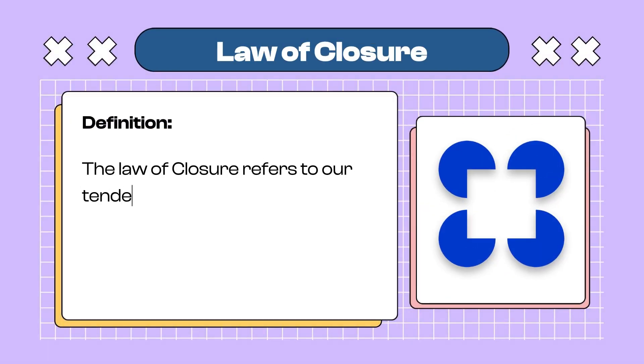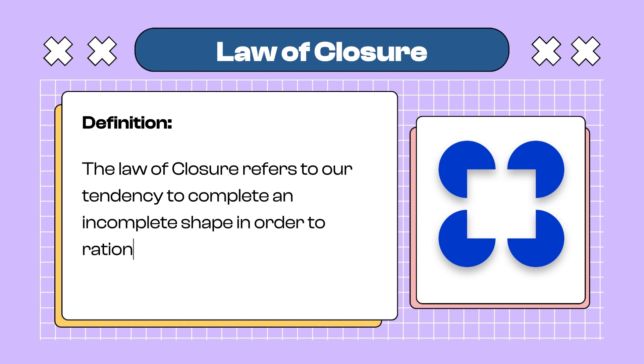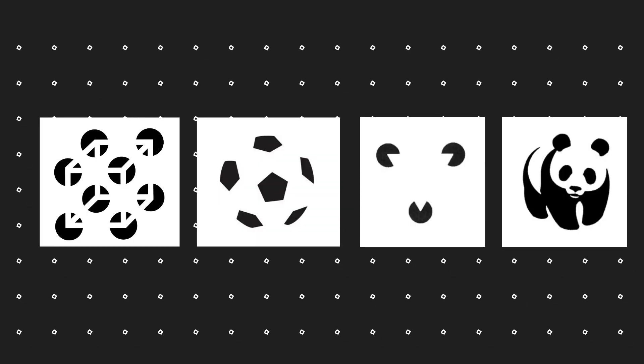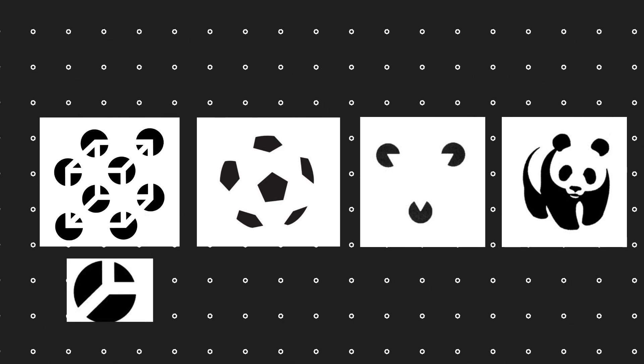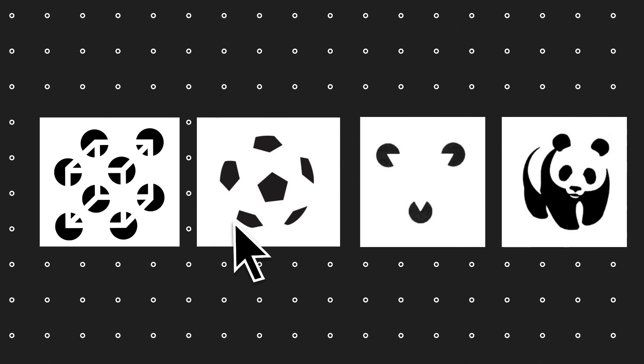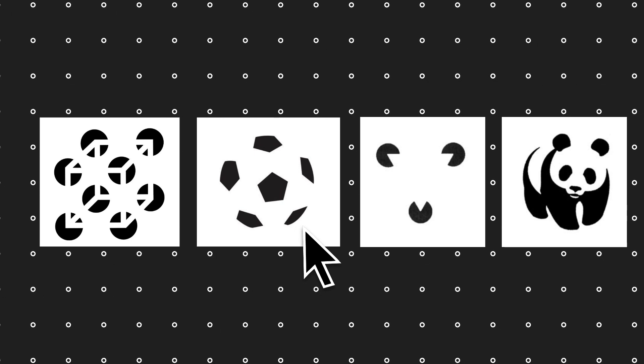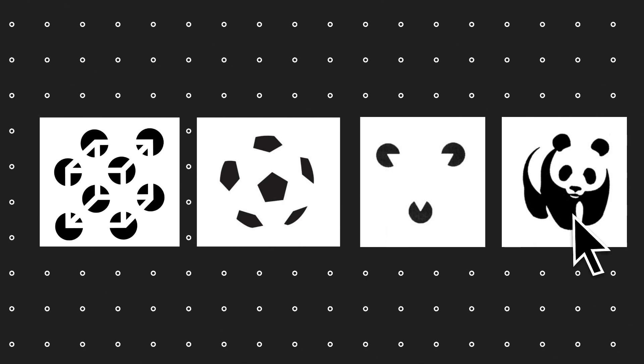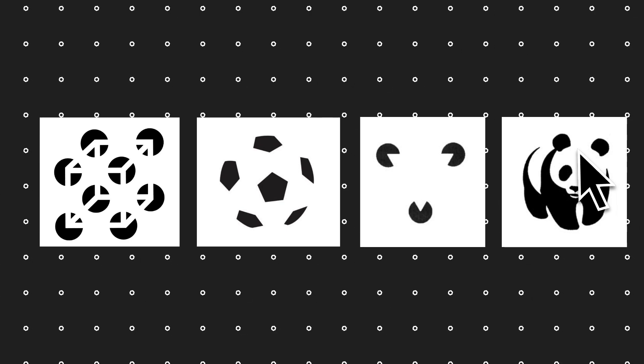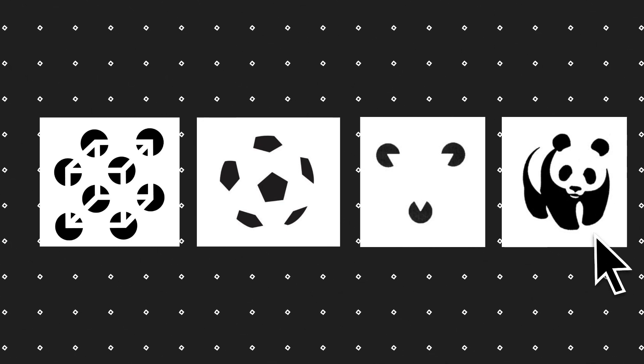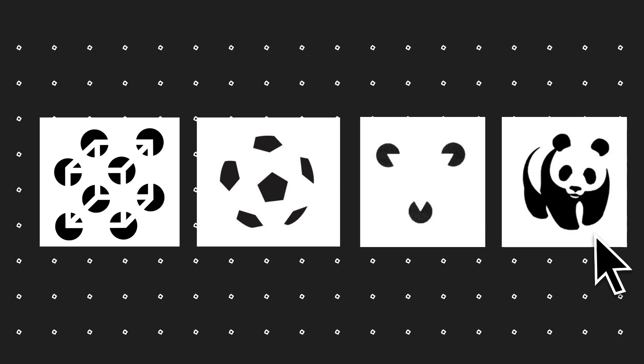Third: The Law of Closure. The Law of Closure refers to our tendency to complete an incomplete shape in order to rationalize the whole. If we place incomplete information, we can automatically fill in the missing elements and recognize the pattern. For example, we recognize a circle, a football, a triangle — we perceive the outline from fragmented information.